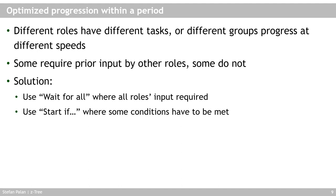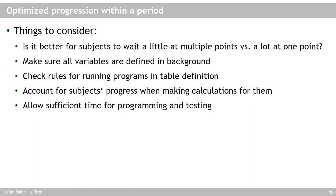Finding an optimal progression strategy within a period depends on you as the experimenter. Consider what roles subjects have to fulfill, what tasks they perform, and whether different groups or individual subjects can and should progress at different speeds. Sometimes you need all group members' input before continuing; sometimes not. Once you've made these choices, use 'wait for all' for stages requiring all roles' input, 'start if condition' where conditions must be met, and 'start when possible' when no conditions are needed.